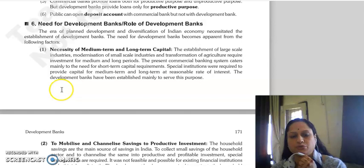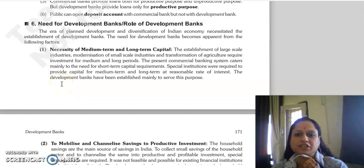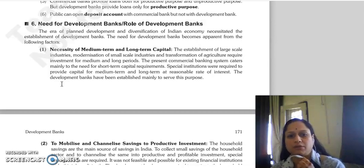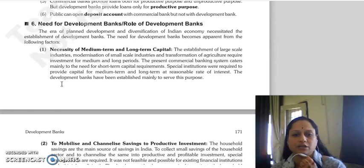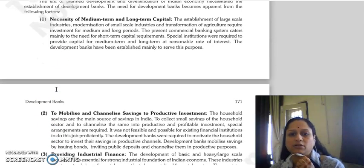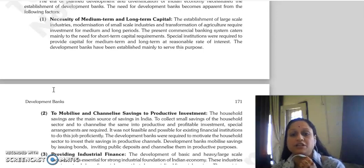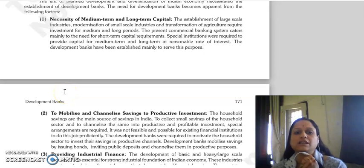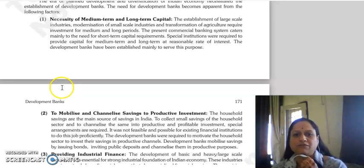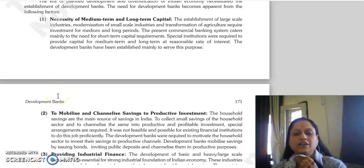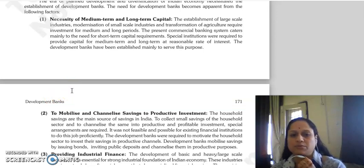When plan development started in India, when 5-year plans were made and the diversification of the Indian economy was undertaken, the need for development banks became clear. The first need is the necessity of medium-term and long-term capital for establishment of large-scale industries, modernization, small-scale industries, and transformation of the agriculture sector. The existing commercial banking system provided merely short-term capital, so specialized institutions were needed to provide medium-term and long-term capital at reasonable rates of interest. For these purposes, development banks were established.